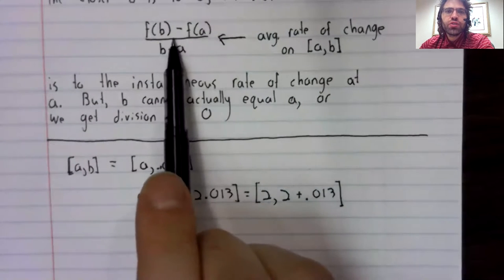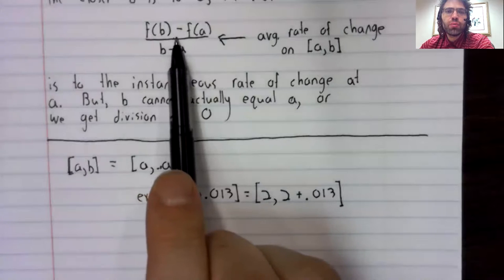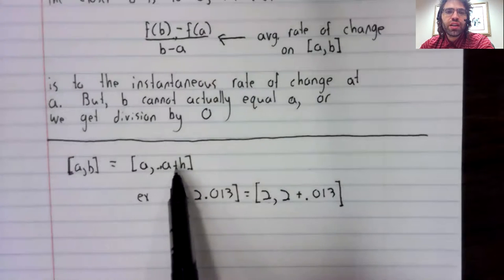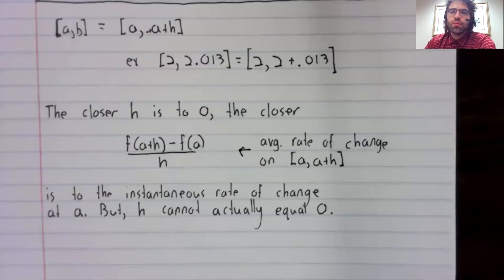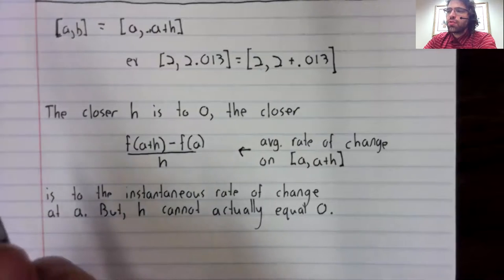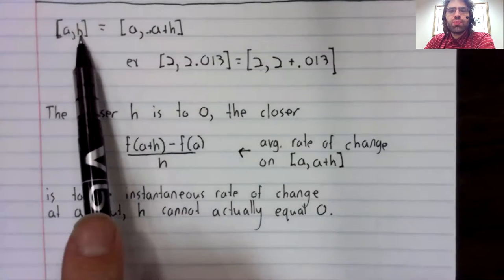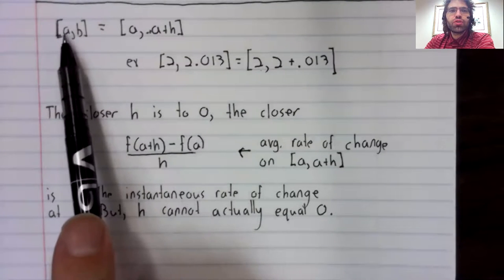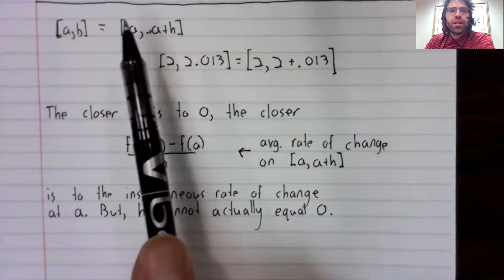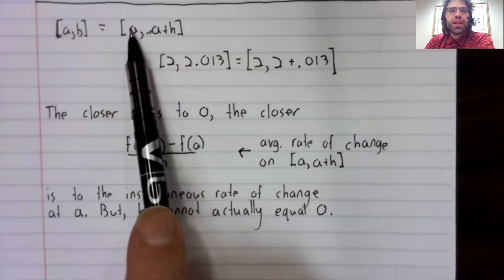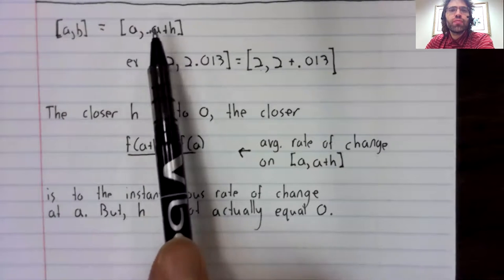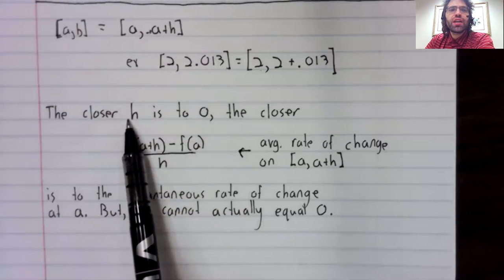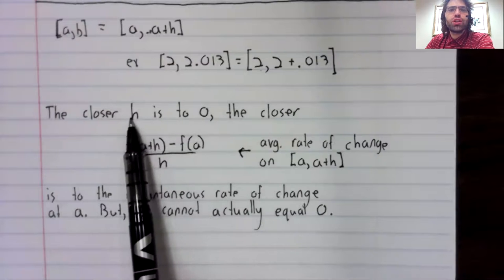So let's just take this formula and stick a plus h in the place of b. So if we have the right end point approach the left end point, and the left end point is a and the right end point is a plus h, that means we're letting h approach zero.